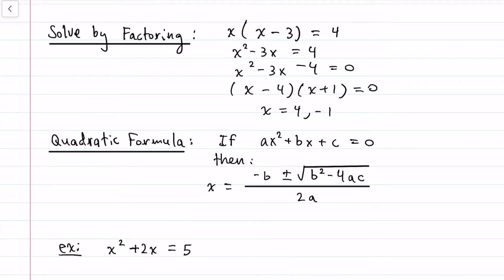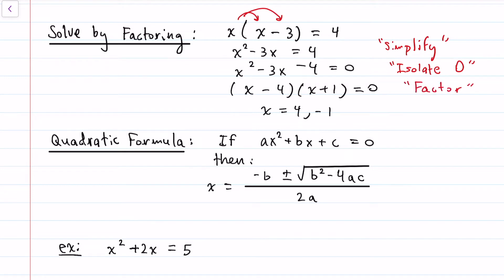So I have this example here where the steps are already laid out for us. When we solve by factoring we distribute and essentially simplify both sides of the equation. Then we move everything to one side with zero on the other — I call this isolating zero. So here we've isolated a zero.